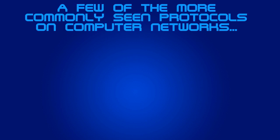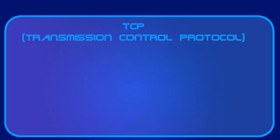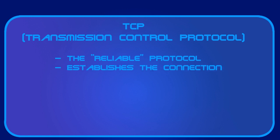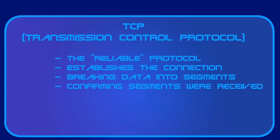So now, let's take a quick look at just a few of the protocols we commonly see on a computer network. The first is TCP, better known as Transmission Control Protocol. This is often referred to as the reliable protocol. TCP ensures the reliable delivery of data by establishing a connection, breaking down information into segments, and then confirming that the segments were received correctly, without errors, in the right order on the other end.